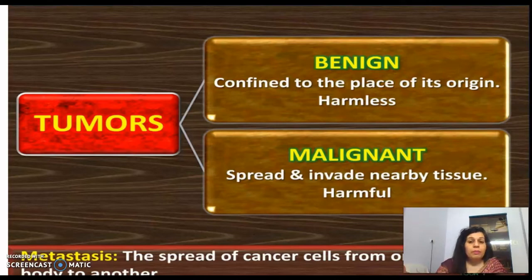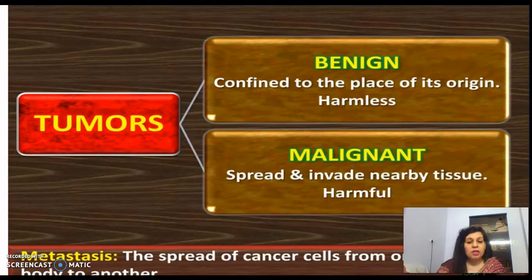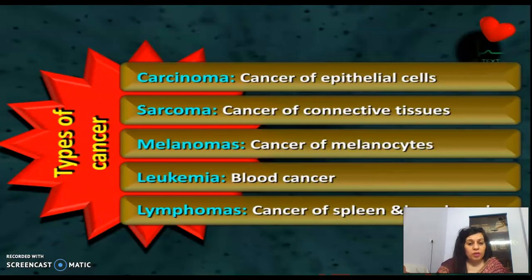A further problem is that when so many cells are multiplied, they will compete with normal cells for nutrition, thereby starving and damaging the surrounding normal tissue.